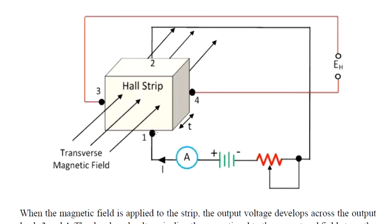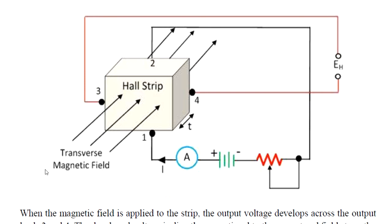In the figure, this is a Hall Effect material — a semiconductor material, specifically a P-type semiconductor material. This is the Hall Effect property. If we consider a strip and look at its two faces, a current is applied, and a magnetic field perpendicular to the strip is present — meaning the magnetic field is in this direction, with current flowing through the material.